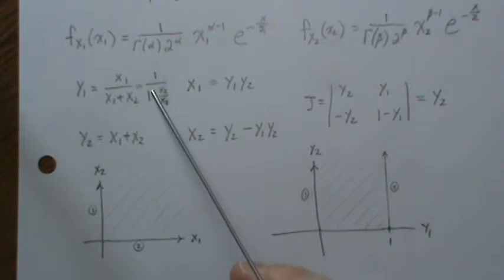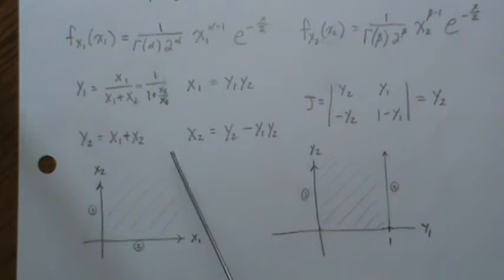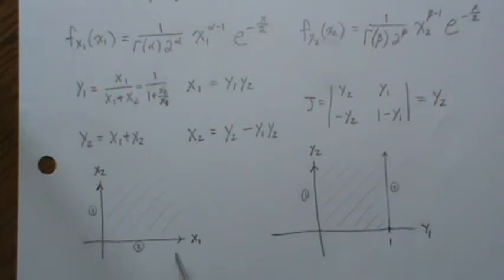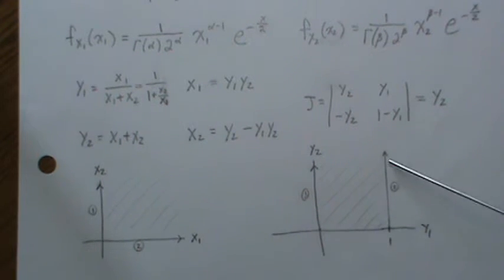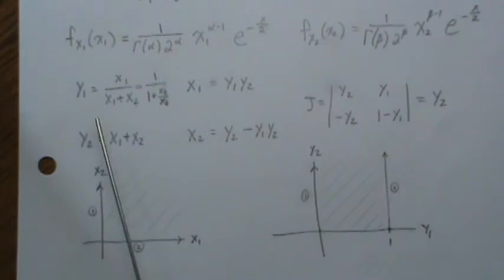So this border gets mapped to Y1 is 1 and then Y2 gets to go from 0 to infinity. So this is the second border.